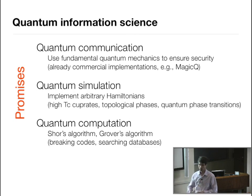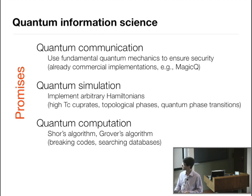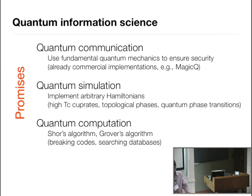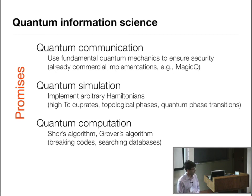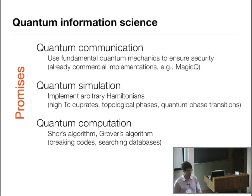These promises are implicit in every discussion about quantum devices and information science. They involve three basic concepts: quantum communication, using the fundamental laws of quantum mechanics to ensure security and produce entanglement at longer distances; quantum simulation, where we build a controlled, simpler system to simulate complicated quantum mechanical systems; and pure information processing — running algorithms using quantum devices, including breaking codes and searching databases.